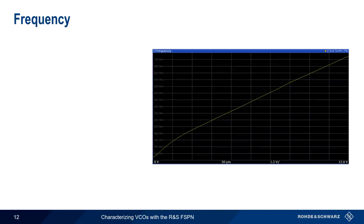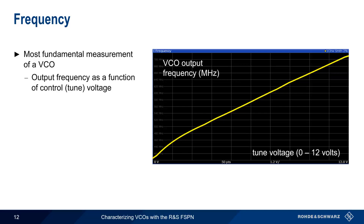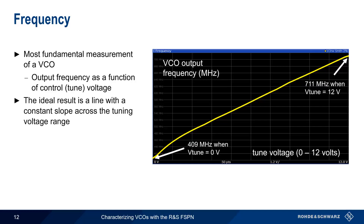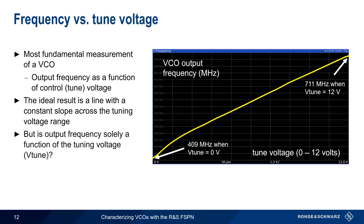We'll start with the frequency measurement — the most fundamental measurement of a voltage-controlled oscillator — which is a plot of output frequency as a function of control or tune voltage. In this example, the output frequency is about 409 MHz when tune voltage is 0, and about 711 MHz when tune voltage is plus 12 volts. In almost all cases, the ideal result is a straight line whose slope is constant over the tuning voltage range. Here, the line is fairly linear except at the very high end and at very low tune voltages. Note that we're assuming output frequency is solely a function of tuning voltage.